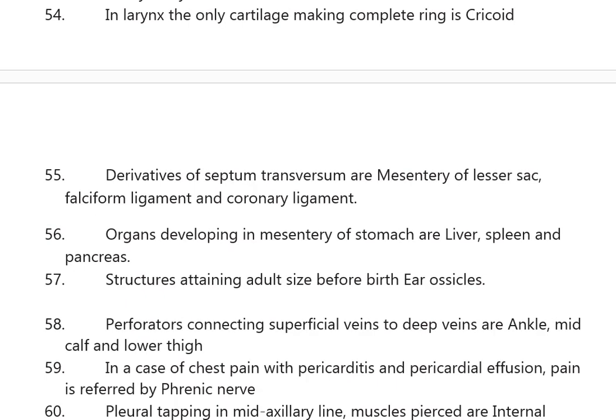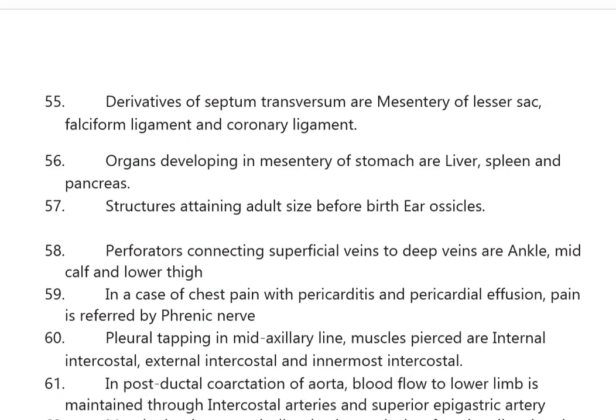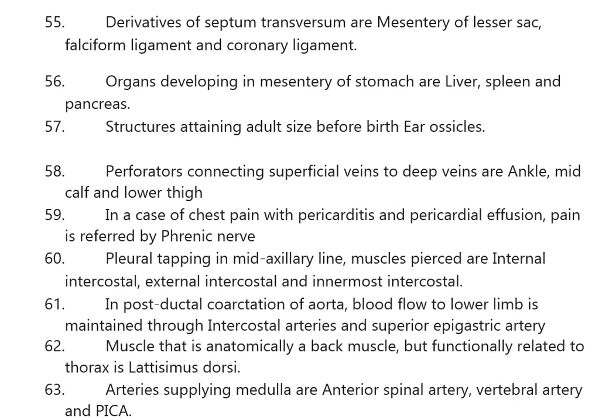In the larynx, the only cartilage making a complete ring is the cricoid. Derivatives of the septum transversum are the mesentery of the lesser sac, falciform ligament, and coronary ligament. Organs developing in the mesentery of the stomach are the liver, spleen, and pancreas.